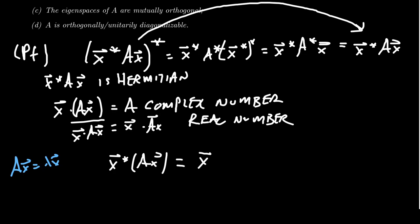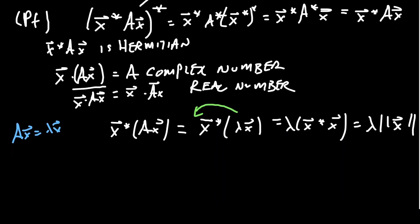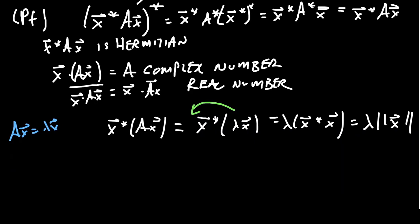And as we're now in the second factor, pulling it out doesn't do anything in terms of conjugation. You'll pull out the number lambda. We get lambda times X star X, like so. In which case, this then gives us lambda times the length of X. And as eigenvectors cannot be zero, the length of X is non-zero.